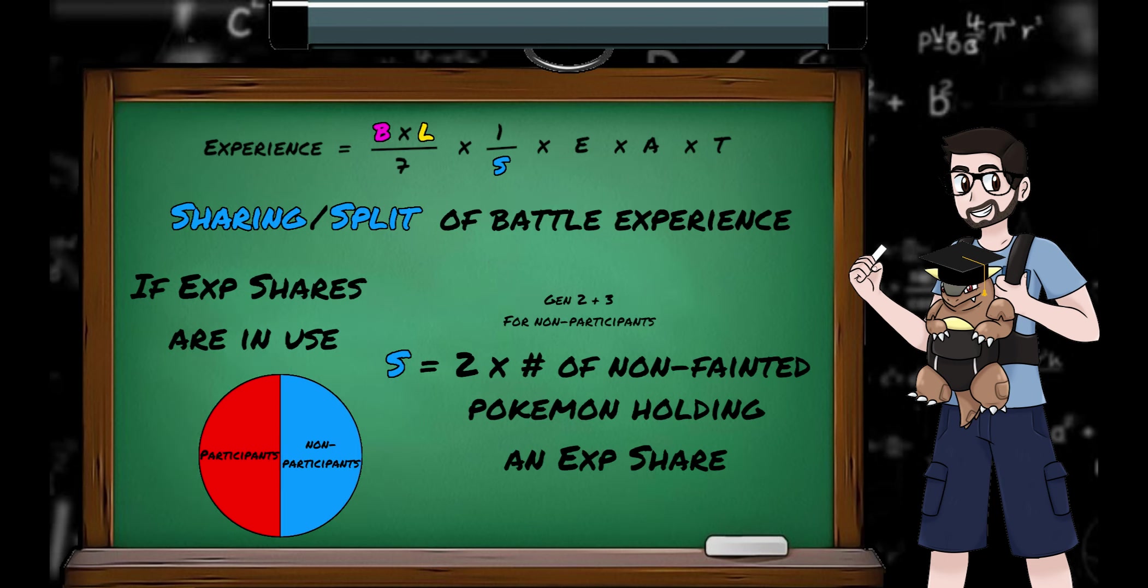For generations 2 and 3, these issues are resolved, and we get some pie charts that actually make sense. For non-participants, if they're holding the XP share, S is equal to twice the number of non-fainted Pokemon holding the XP share.